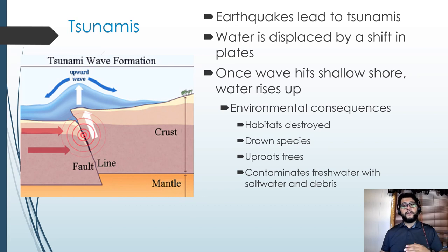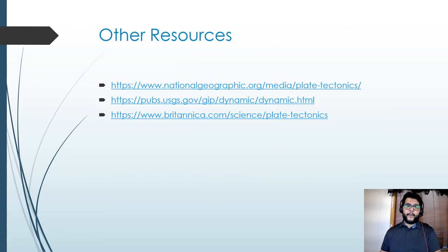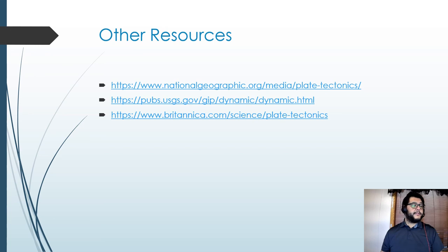Tsunamis have many environmental consequences, including destruction of habitat, drowning species, uprooting trees, and contaminating fresh water with salt water and debris from the wave. Here are some other resources you can check out that might help with your studies. Hopefully this was helpful — thank you.